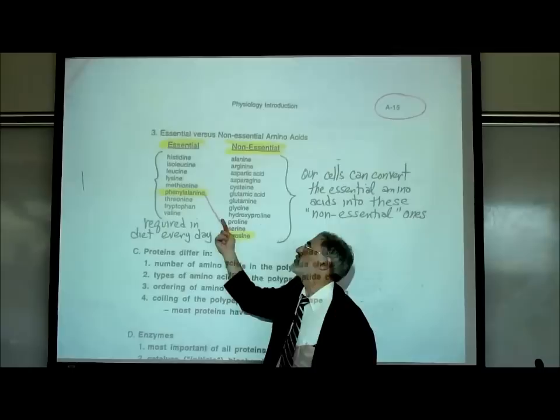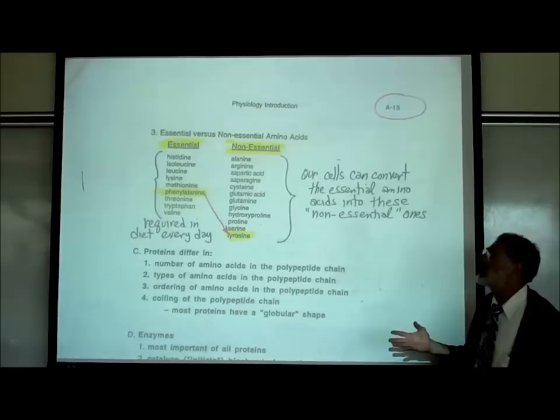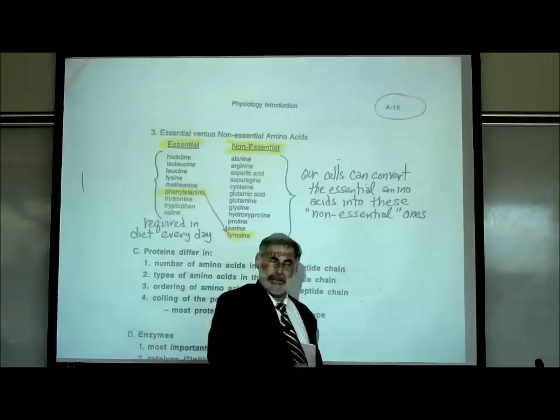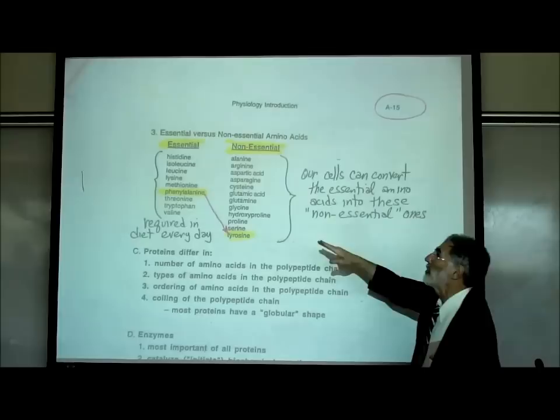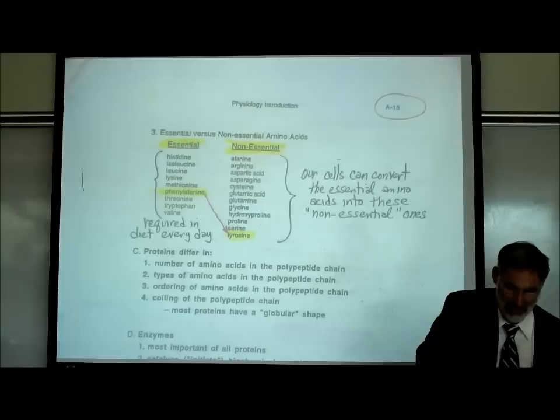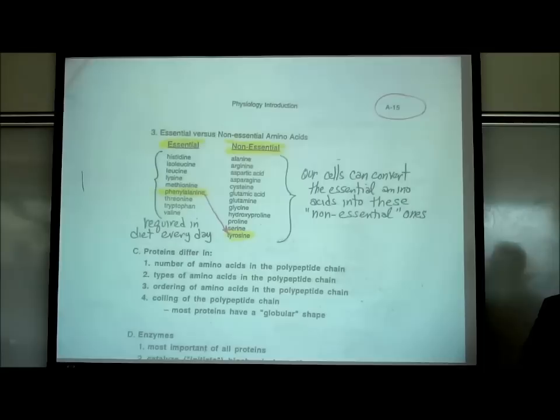However, we can't go in the reverse direction — we cannot convert tyrosine into phenylalanine. So phenylalanine is an essential amino acid. We must get sufficient amounts of it from the proteins we eat, or we won't have all the amino acids needed to build the proteins in our body.